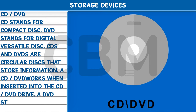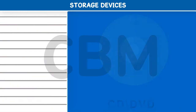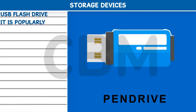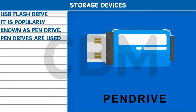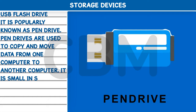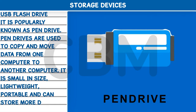A DVD stores more information than a CD. USB Flash Drive: It is popularly known as a pen drive. Pen drives are used to copy and move data from one computer to another. It is small in size, lightweight, portable, and can store more data.